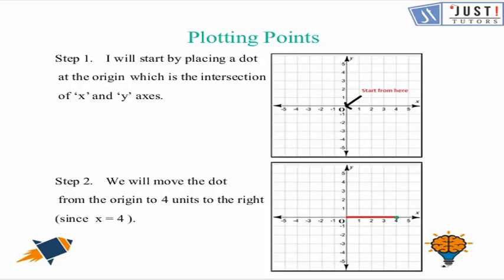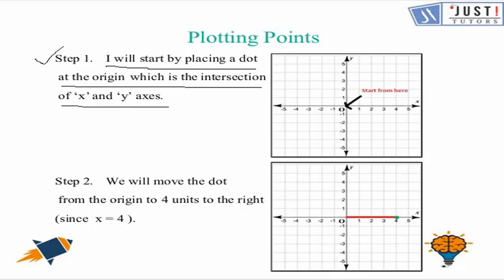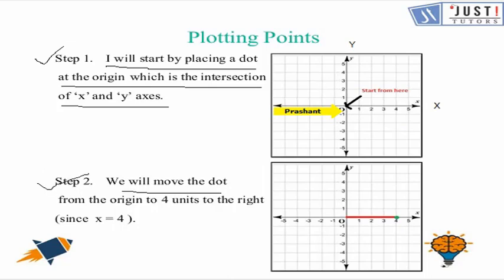If you want to understand the steps: Step 1 — I will start by placing a dot at the origin, which is the intersection of the x and y-axis. Step 2 — we will move the dot from the origin 4 units to the right, because the x value is 4 in the previous question, so we will travel 4 units.